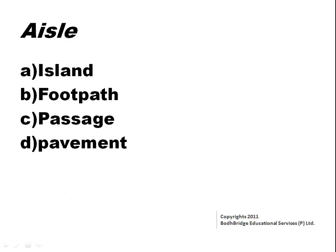Isle. Isle is a passage between seats, rows, etc. The options are: island, footpath, passage, pavement. The correct answer would be option C, passage.